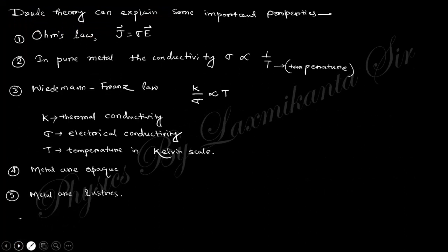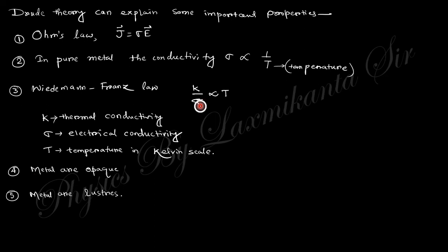Using Drude theory, we can explain Ohm's law, and we can explain that electrical conductivity is proportional to 1 over T, where T is the temperature. The third result is the Wiedemann-Franz law: K over sigma, where K is the thermal conductivity and sigma is the electrical conductivity, is proportional to temperature in the Kelvin scale. Additionally, the theory explains why metals are opaque and why metals are lustrous.